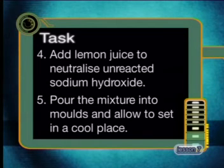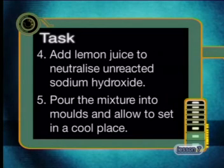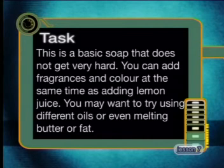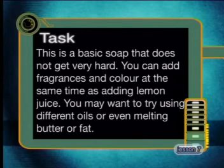Step 3: add the cooking oil to the sodium hydroxide and continue to stir — the mixture will start to thicken. Step 4: add lemon juice to neutralize any unreacted sodium hydroxide. Step 5: pour the mixture into molds and allow to sit in a cool place. This is a basic soap that does not get very hard. You can add fragrances and color at the same time as adding the lemon juice, and you may want to try using different oils or even melting butter or fat. Follow these steps carefully and experiment to make different types of soap.